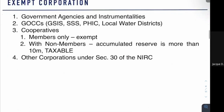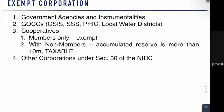Aside from the three exempt corporations in the definition, there are other exempt corporations. First, government agencies and instrumentalities — because of the exemption of the government, which is an inherent limitation of taxation. Next, GOCCs such as GSIS, SSS, PhilHealth, and local water districts are also exempt, again because of the inherent limitation on exemption of the government.